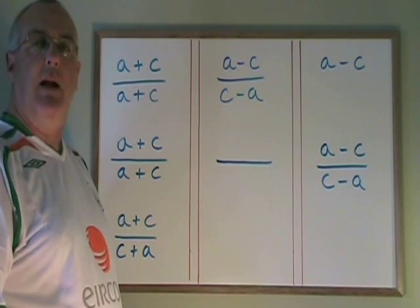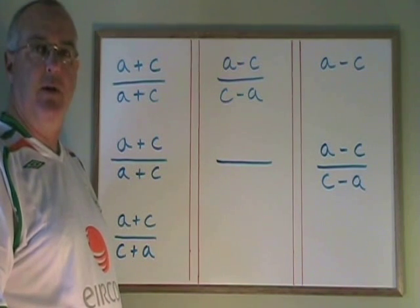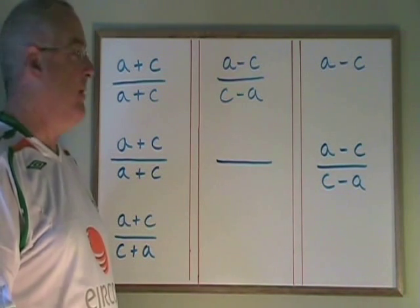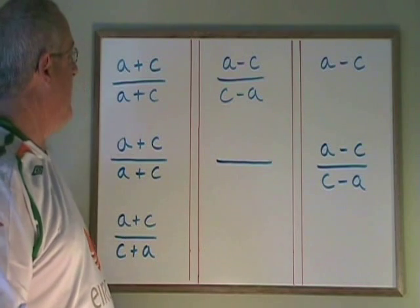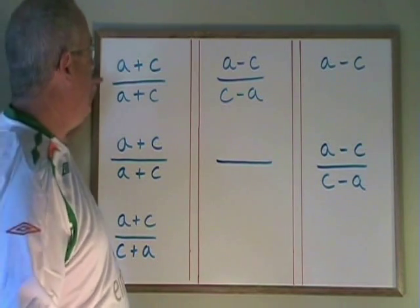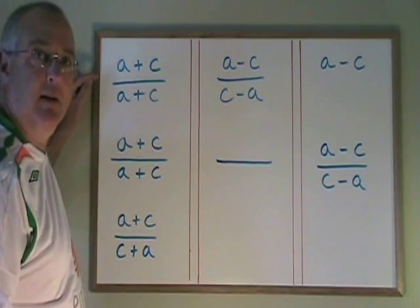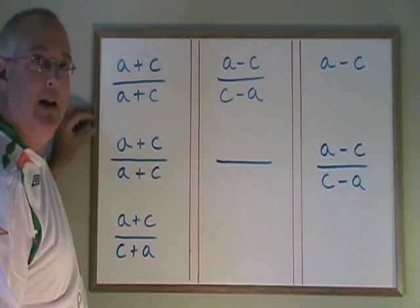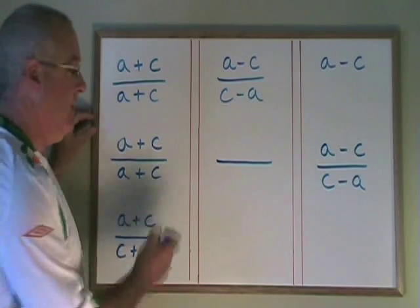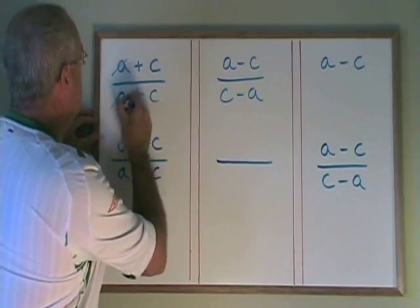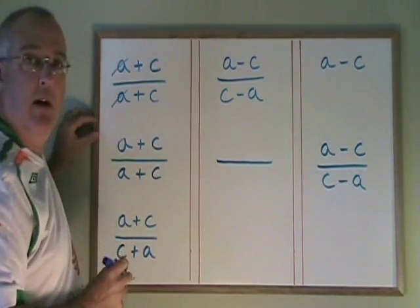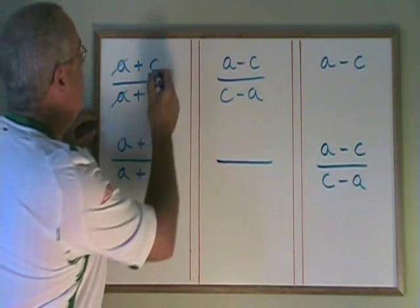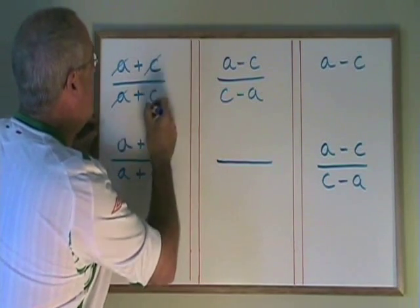When we work with algebraic fractions, we look for canceling opportunities. When we see something like this, we might be tempted to cancel the a's, like so, and maybe also cancel these c's, like so.